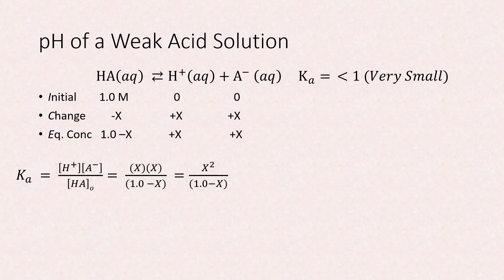But the equilibrium constant is very small for weak acids. This means when the system reaches equilibrium, there will be much more reactant than product. Thus, the extent of the reaction is small.